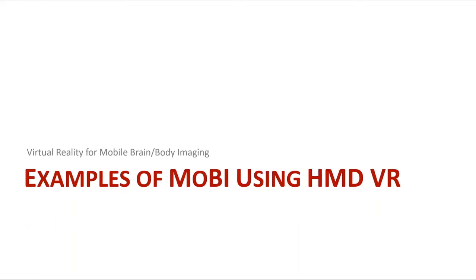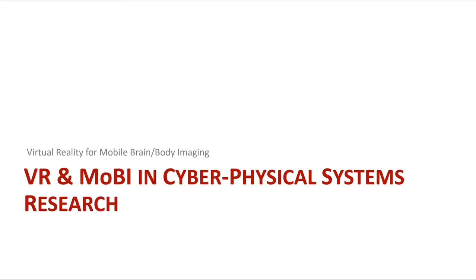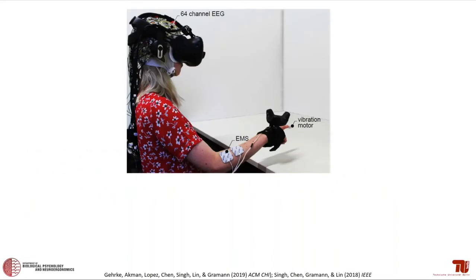I'd like to give three examples of mobile brain-body imaging experiments using head-mounted VR. The first is VR in mobile brain-body imaging for cyber-physical systems research — a classical neuroergonomics topic. We try to understand how present users feel in a given cyber-physical system. Currently this is assessed via questionnaires, which interrupt the experience. We try to find implicit brain-dynamic measures that would reflect presence in cyber-physical systems, using EEG or fNIRS to improve and adaptively adjust these systems.